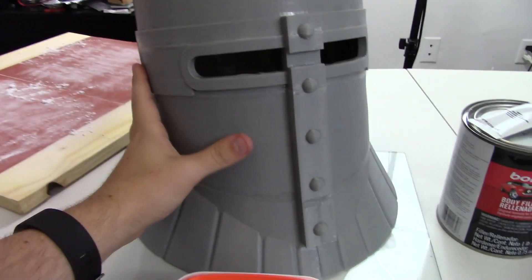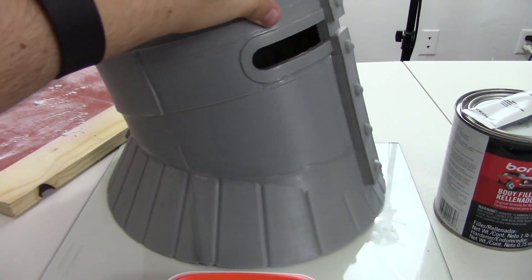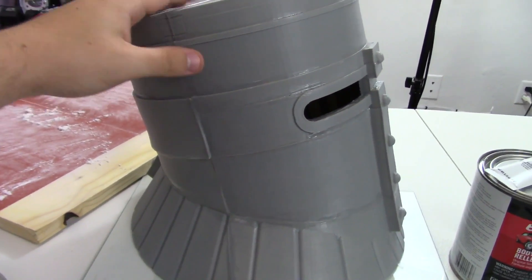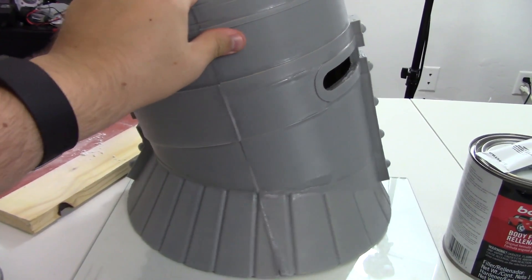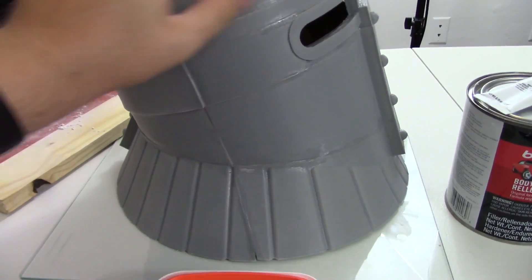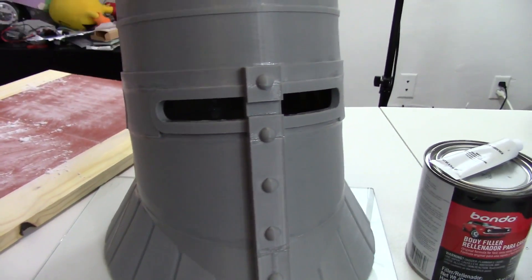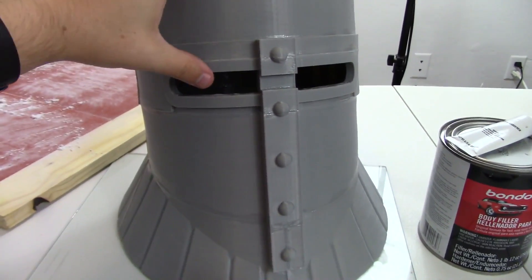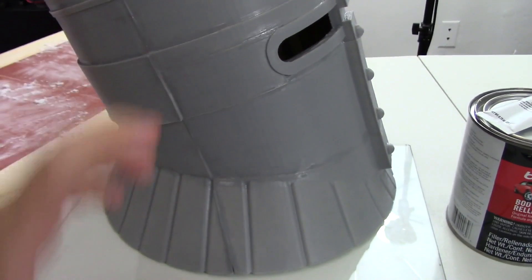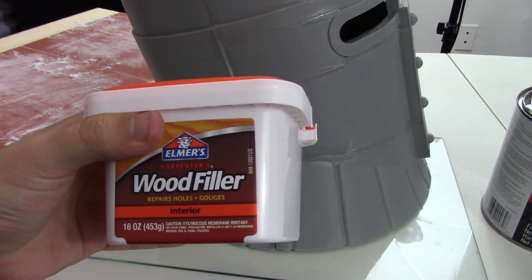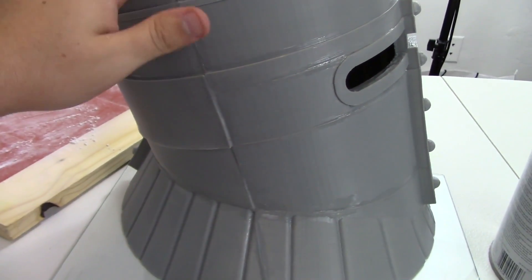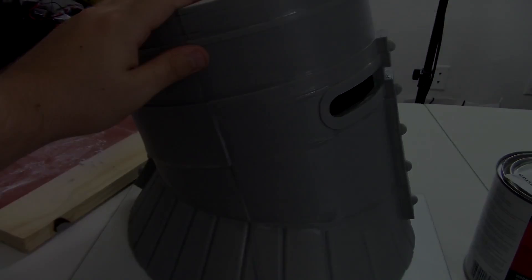Also, you may recognize this as the helmet from Solaire from the video game Dark Souls. This is part of a project that I've been working on. So be sure to subscribe to check out how this project completes because I'm really happy with the way that it looks. But let's get into using some wood filler to fill some cracks in 3D printed parts.